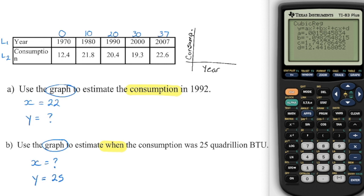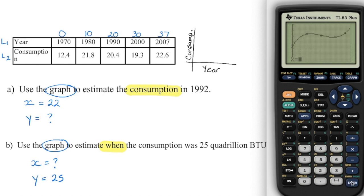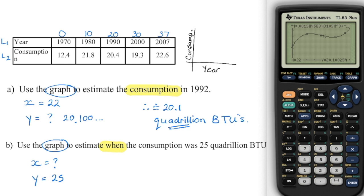Similar to what we did before, we're going to go into Graph, then Second Function Trace. Number one allows me to enter an X value — I'm looking for when X is 22, what is the Y value? The Y value happens to be 20.100. We're working in quadrillion BTUs, so we have about 20.1 quadrillion BTUs.